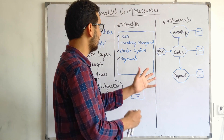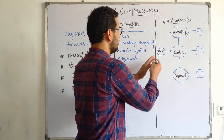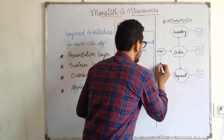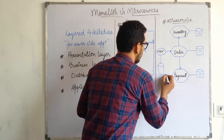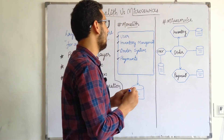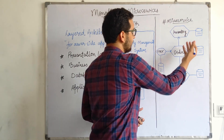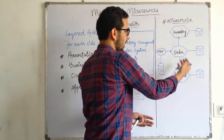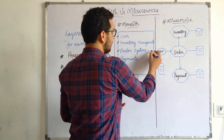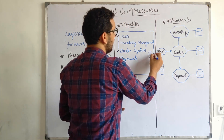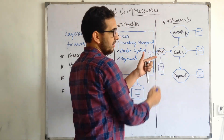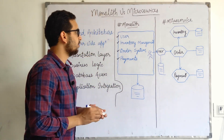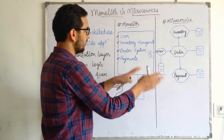In microservices, on the other hand, the user entity, inventory management, order system, and payment system are all separate services, each potentially interacting with a different data source. The order service might talk to inventory and payments, and the user going through authentication and authorization would have that logic sitting in the user service.